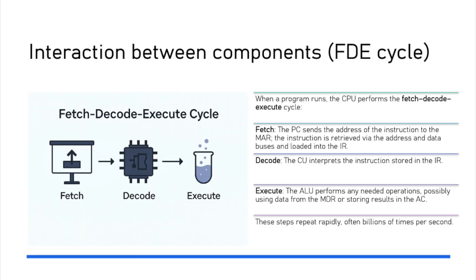All these core components interact as part of the fetch-decode-execute cycle. This cycle is mentioned a lot in exam questions — it is a continuous cycle for as long as the CPU is switched on. In the fetch stage, the program counter sends the address of the next instruction to the memory address register. The instruction is then retrieved via the address and data buses and loaded into the MDR, and from the MDR it's copied into the instruction register, which is how the control unit accesses whatever it needs to execute.